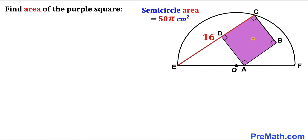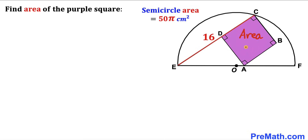Welcome to Pre-Math. In this video we have a purple square fully confined in a semi-circle with center O, such that the area of this semi-circle is 50π cm², and chord EC is 16 cm. Our task is to calculate the area of the purple square ABCD.